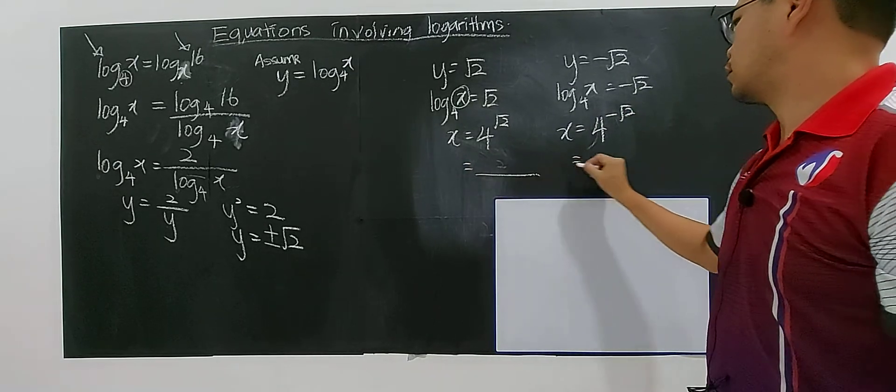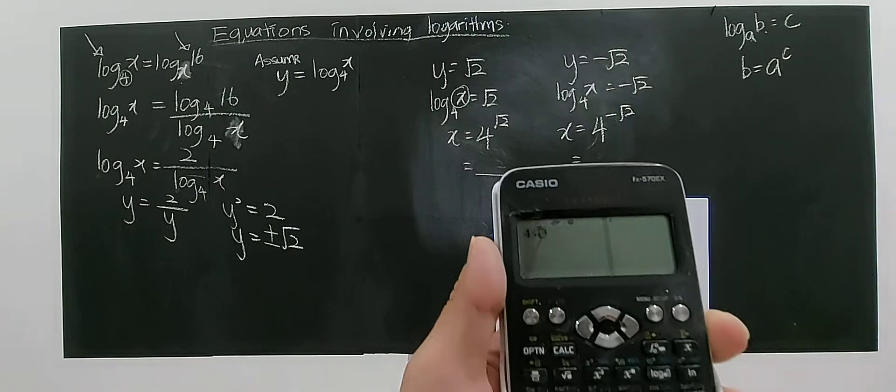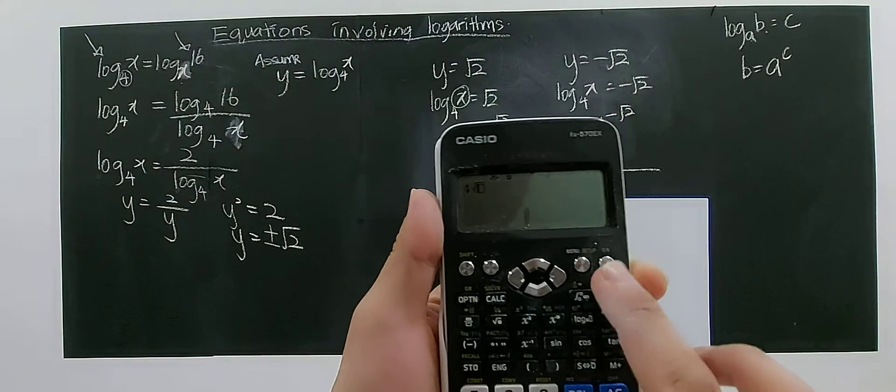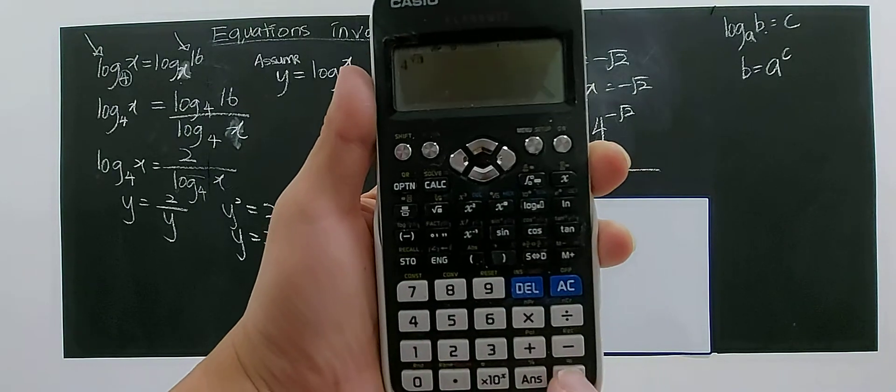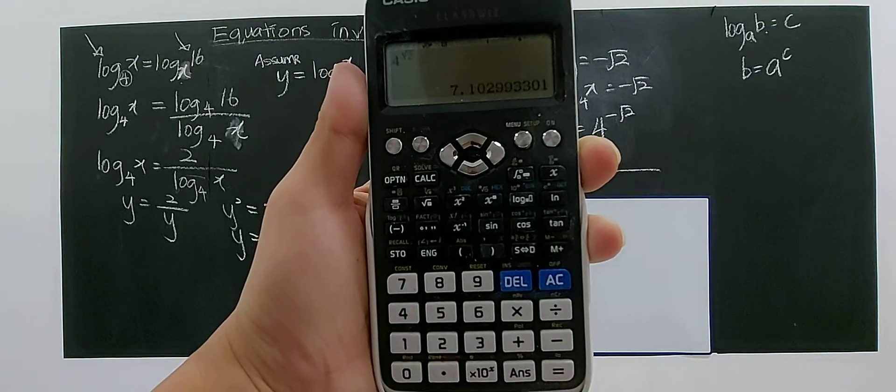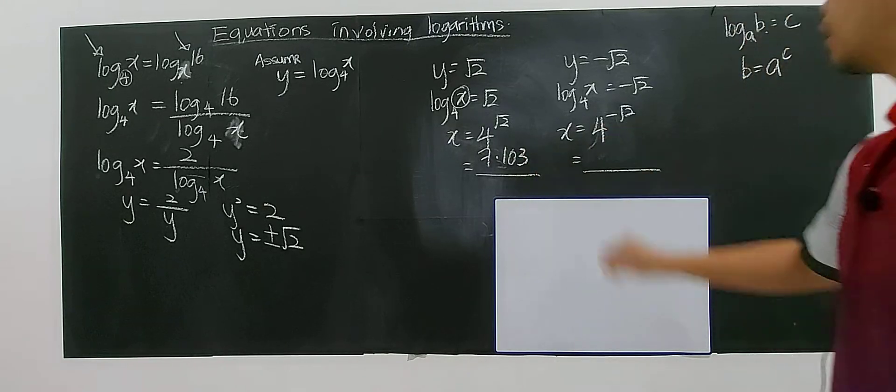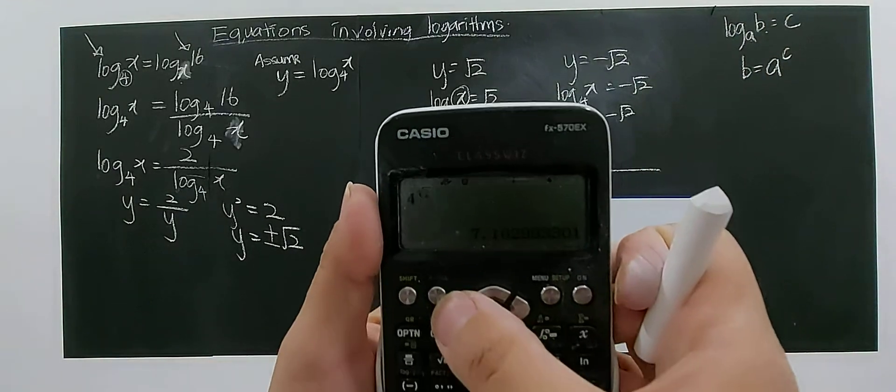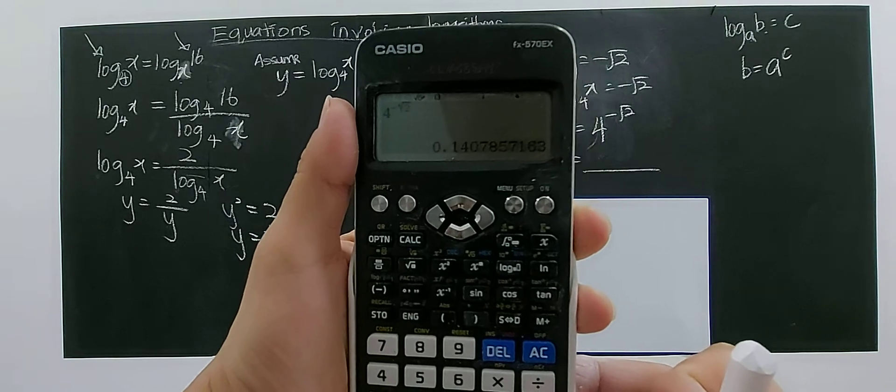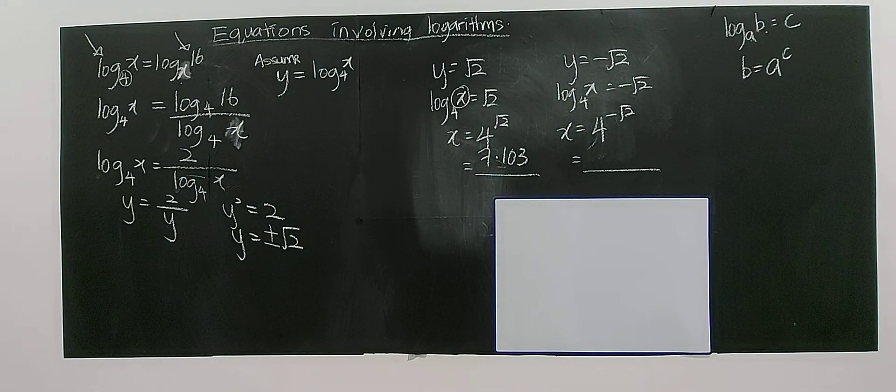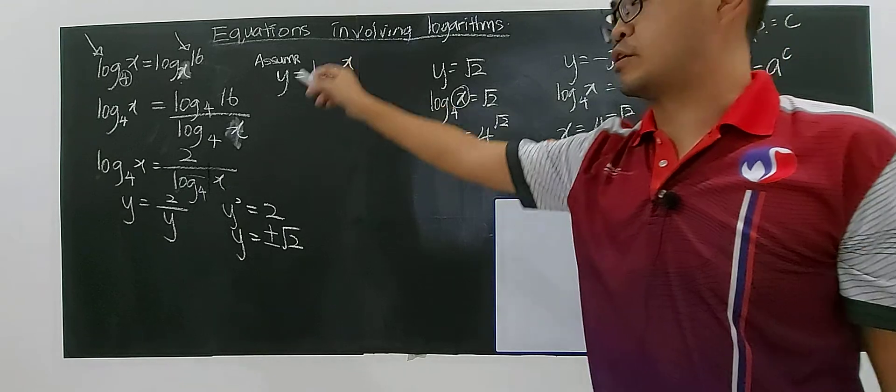So 4 to the power of square root of 2, you have 7.103. And for this you have 4 to the power of negative square root of 2, I put negative in front here. Then I have 0.141. Alright, these two will be your solution for this problem.